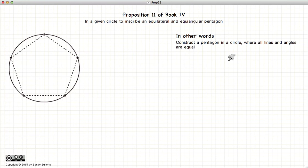In this proposition, we're going to demonstrate the steps required to create a perfect pentagon inside of a circle. And when I mean perfect, I mean equal angular and equilateral. All the sides are equal, all the angles are equal.